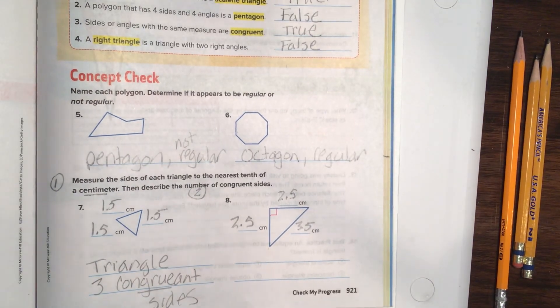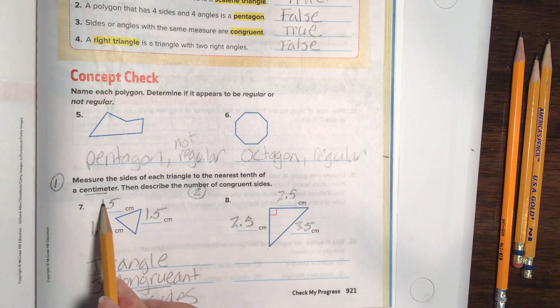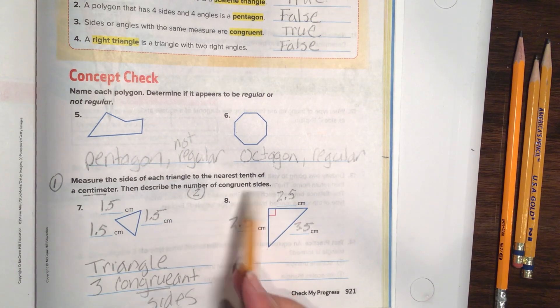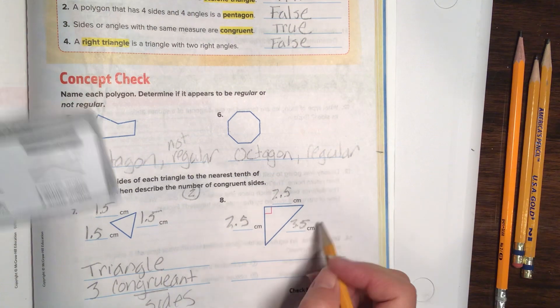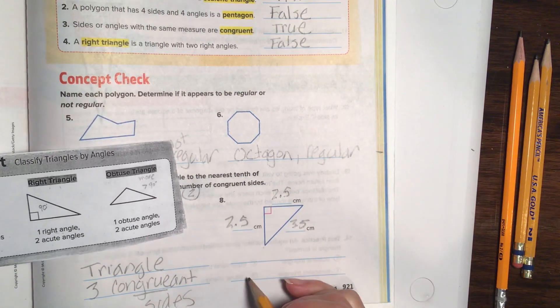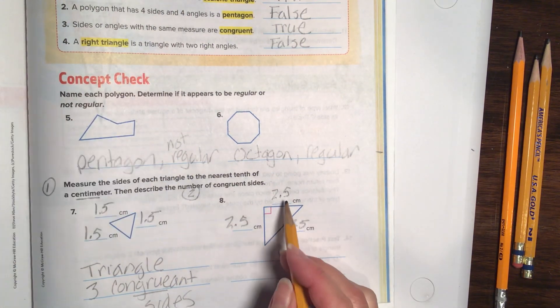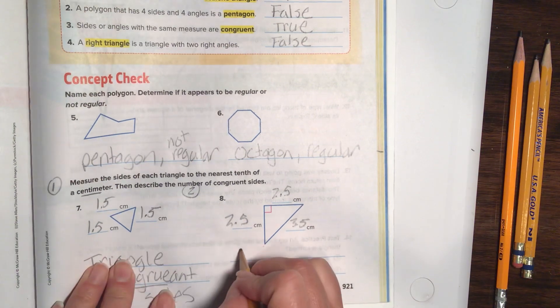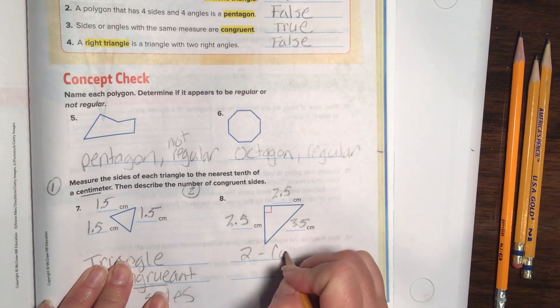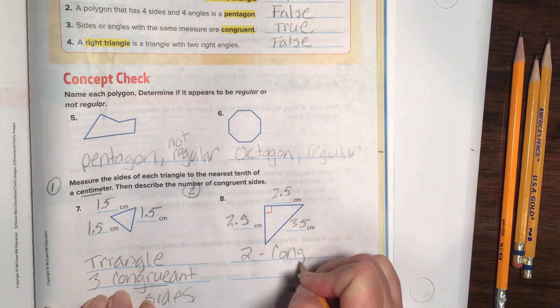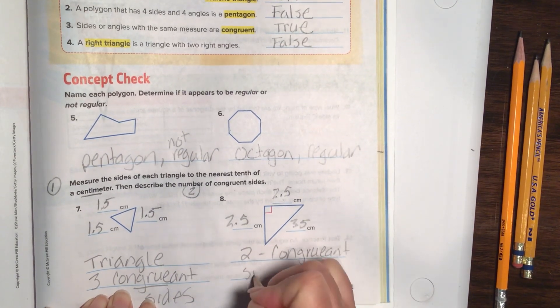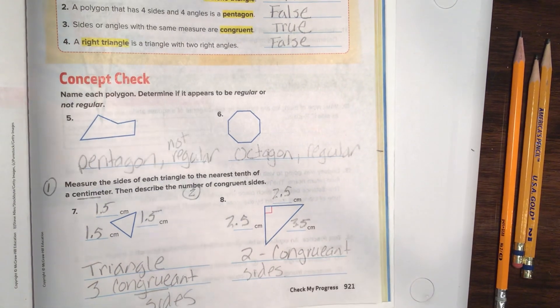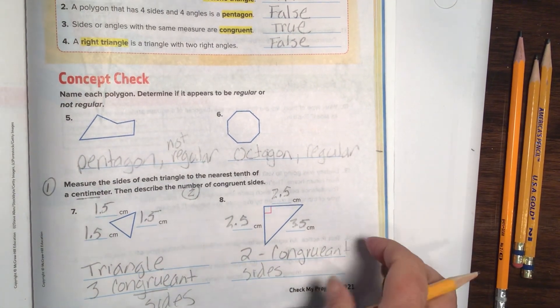Okay. Again, we need to measure the sides. Now describe the number of congruent sides. Great. We're going to say that this, it's a right triangle, but it's not asking us for us to name that. But it's trying to tell us how many congruent sides. And we have two congruent. Two congruent sides. Nicely done, friends.